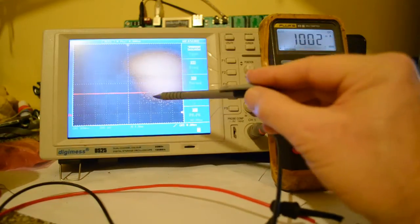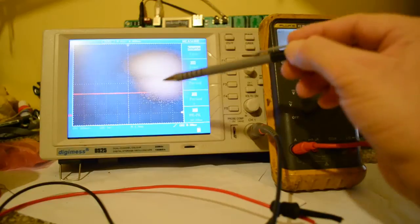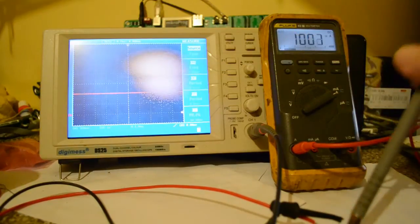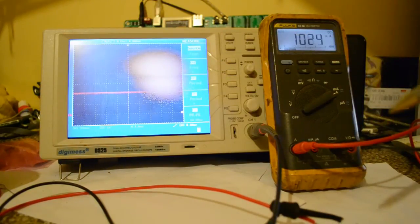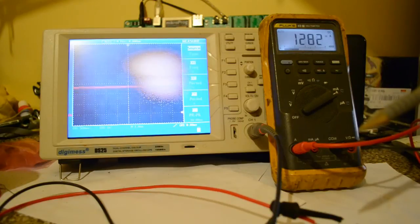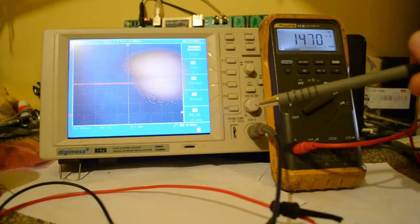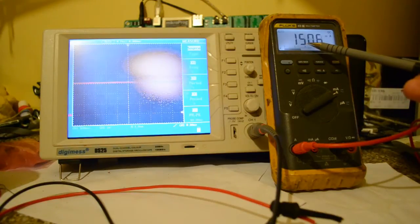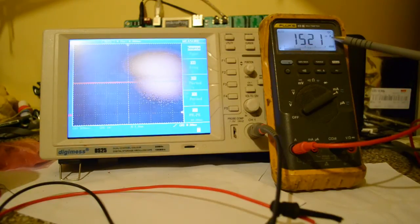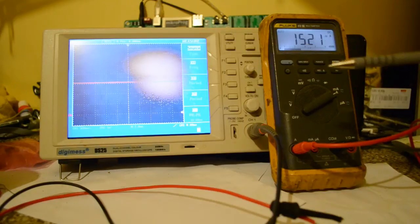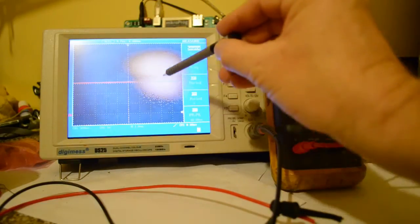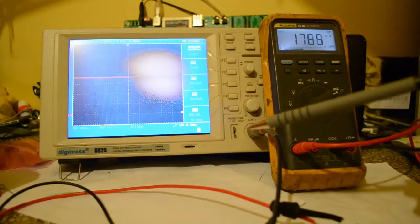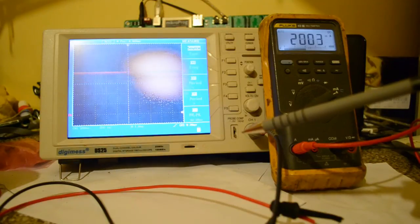So we're getting, I forgot to mention, with these settings, these resistors on that board, I'll show you the drawing, we're getting one volt output per amp. So look, you can see we're up to 1.5 amps.